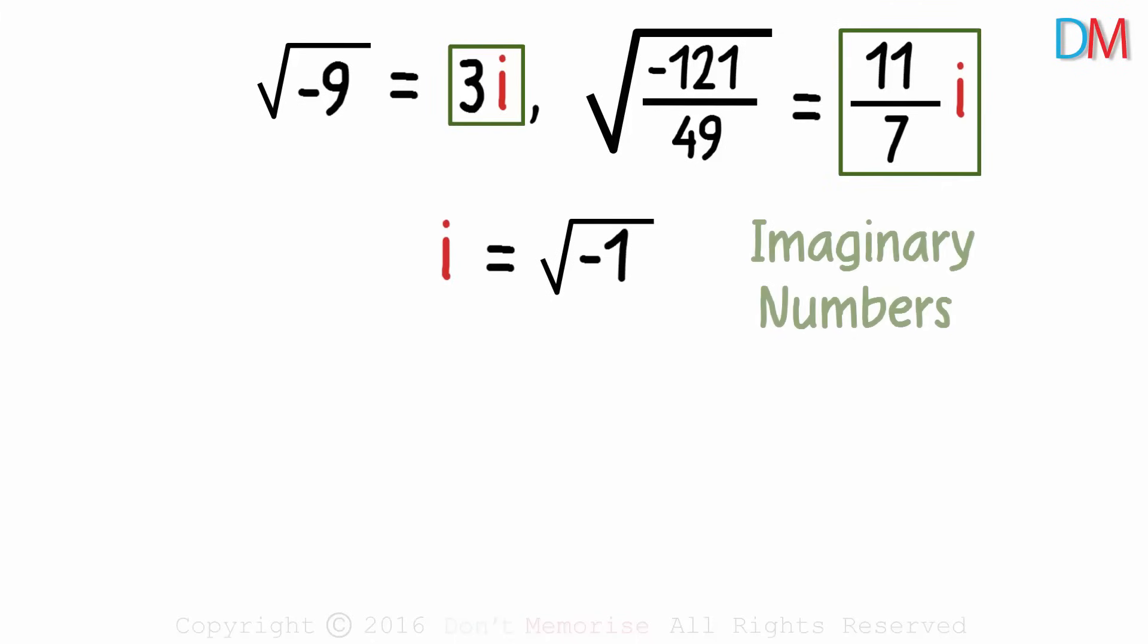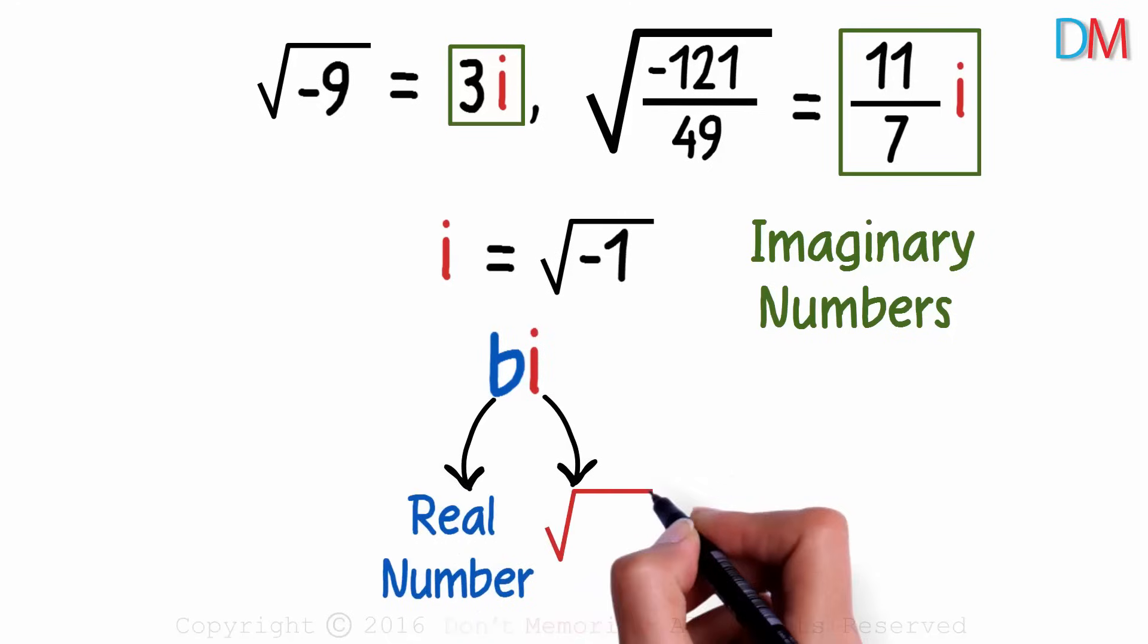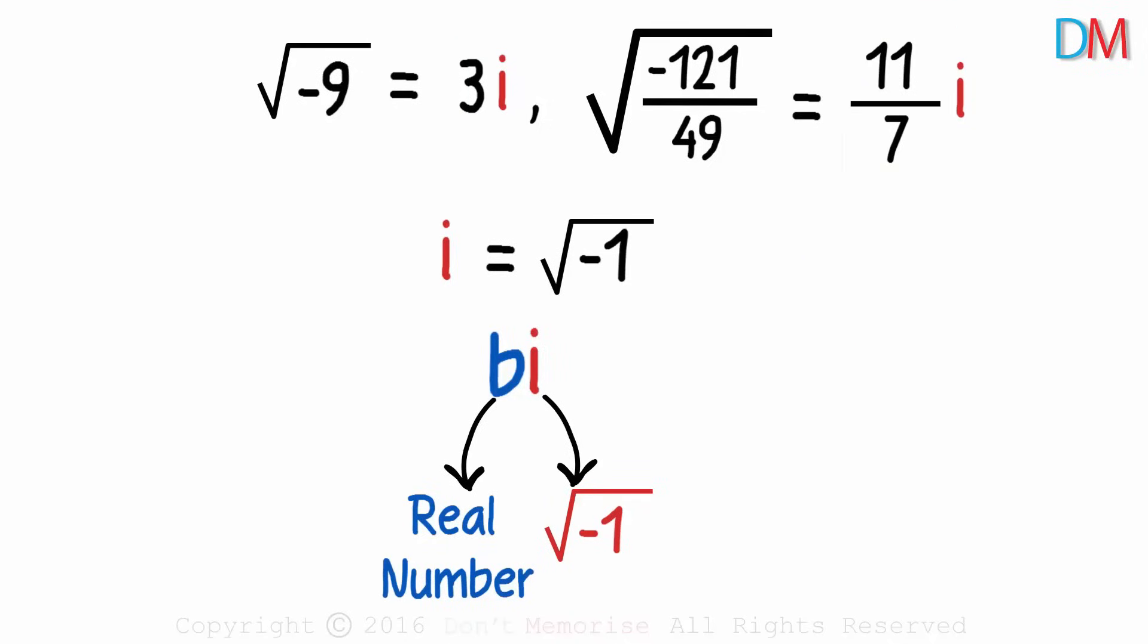These numbers are called imaginary numbers and could be of the form bi where b is a real number and i is equal to square root of negative 1. Numbers like i, 2i, negative 4i are all imaginary numbers.